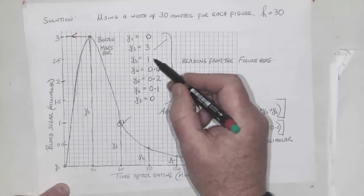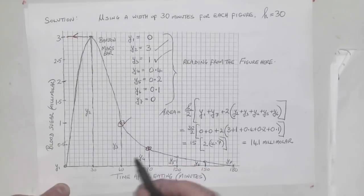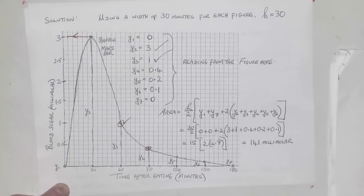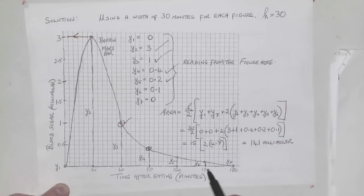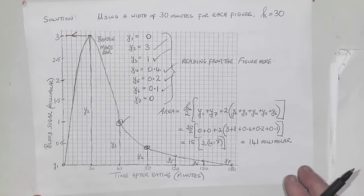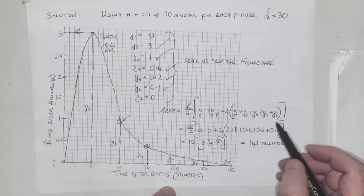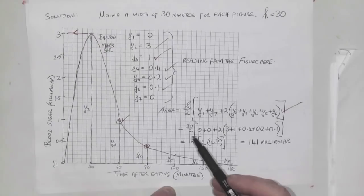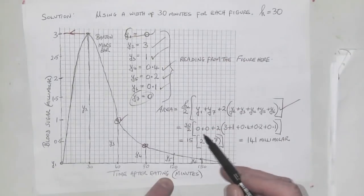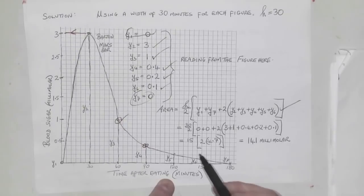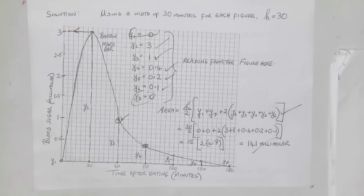I've read them from the figure. Now fill in the formula: H over 2 times (y1 + y7) plus twice the rest. H is 30, so 30 over 2 times (0 + 0) plus 2 times (3 + 1 + 0.4 + 0.2 + 0.1). That's 2 times 4.7 all multiplied by 15, giving 141 millimolars for Barton and the Mars bar.